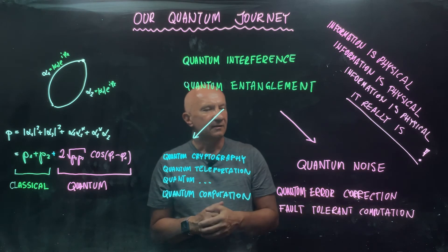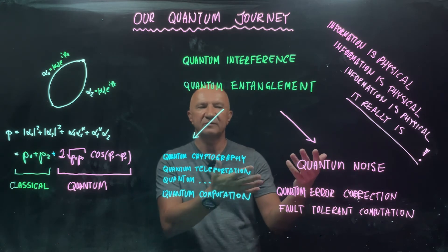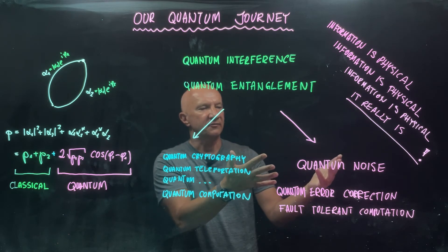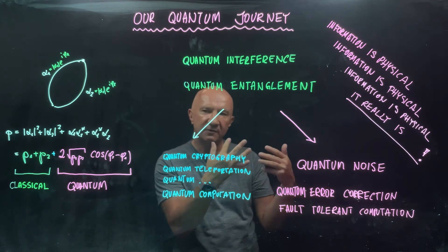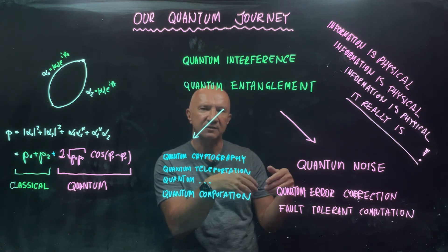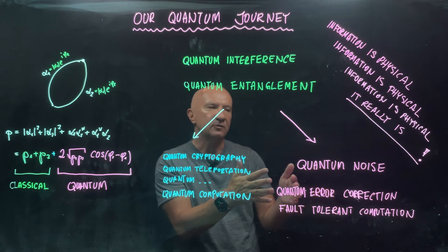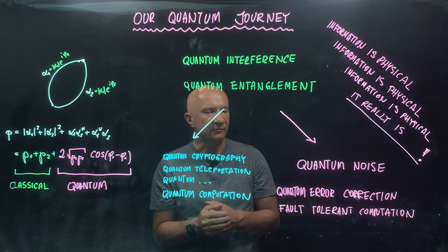And then we went to discuss quantum error corrections and fault-tolerant computation. So the question is, you have this quantum noise. That's a bad thing. It destroys our quantum interference. Is there anything we can do about it? And then we look at the quantum circuits and quantum logic gates and all those things, and we said, there is a way to protect qubits against decoherence, and we can even implement those quantum logic gates in a fault-tolerant way.